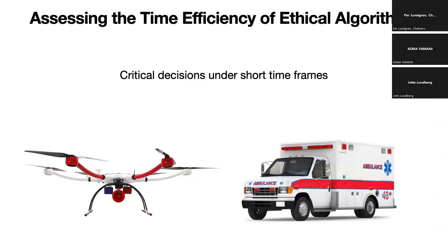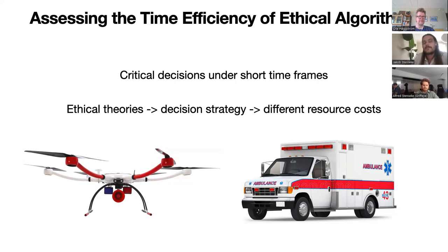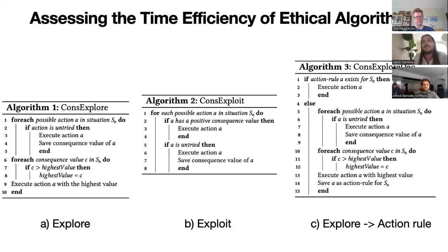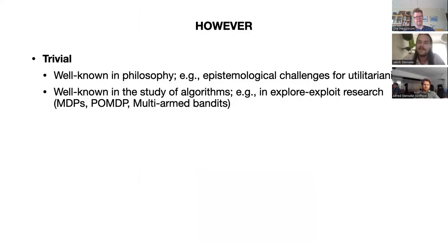I had an idea: self-driving vehicles like a drone or an ambulance may need to make critical decisions under short timeframes. But different ethical theories will give you different decision strategies, which give different resource costs. The question is: what sort of ethical theory or decision strategy should we prioritize? I made a very simple model of three ethical strategies, and you can show that some are good in the long term, some in the short term, some in both.